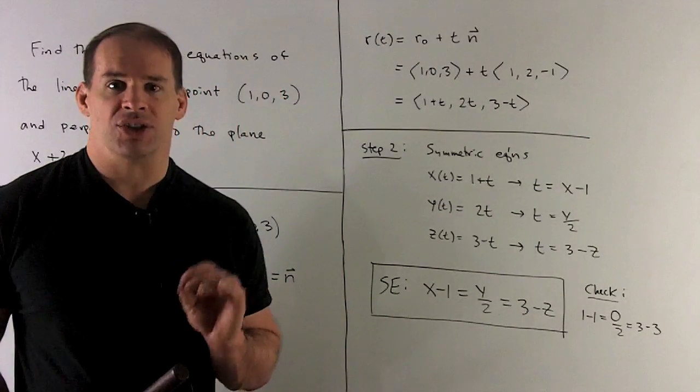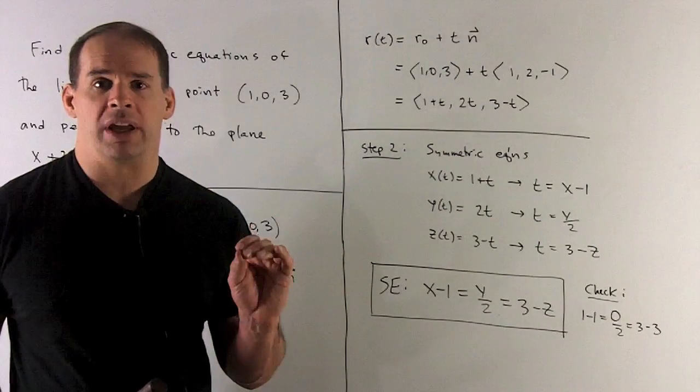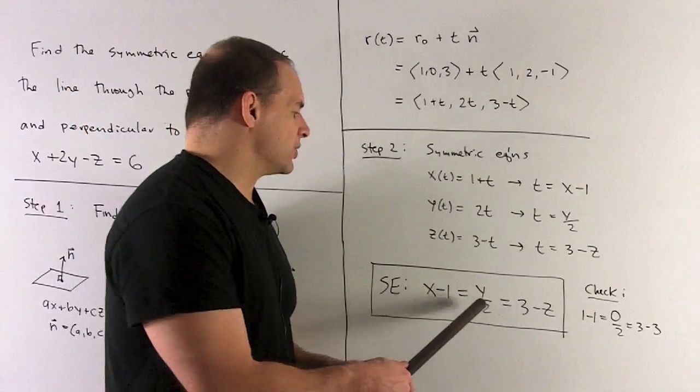Okay, the only thing I have to check is just to see that my point actually satisfies those equations. So we put (1, 0, 3) in, and we'll get 0 equals 0 equals 0.